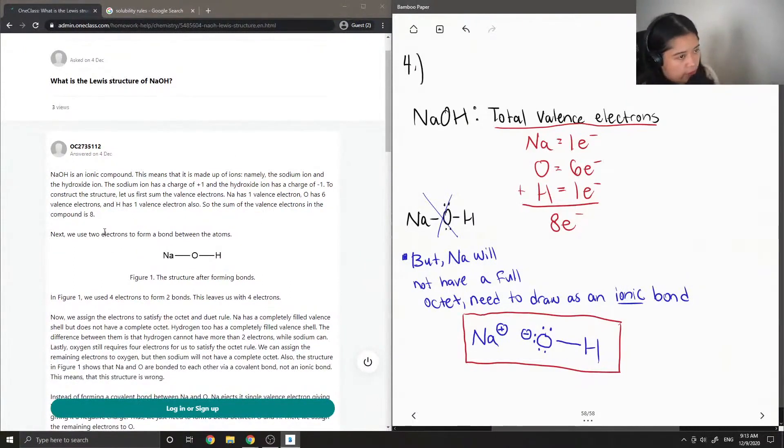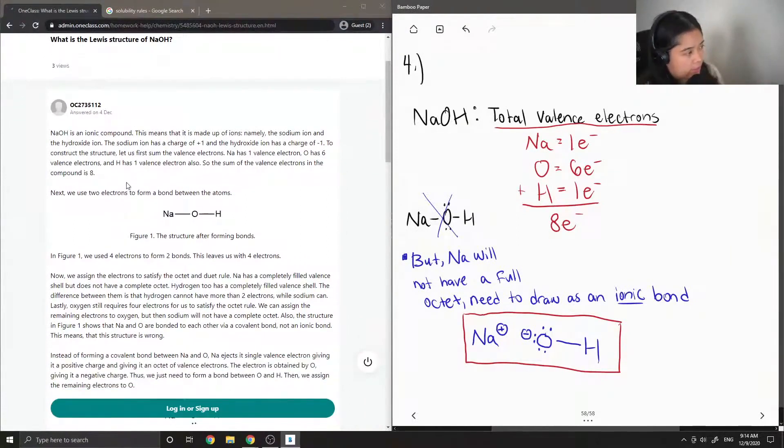Okay, so let's see what the junior tutor said. Sodium hydroxide is an ionic compound. This means that it is made up of ions, namely the sodium ion and the hydroxide ion. Sodium ion has a charge of plus one, and the hydroxide ion has a charge of minus one. To construct this structure, let us first sum the valence electrons. Sodium has one valence electron, oxygen has six, and hydrogen has one. So the sum of the valence electrons in the compound is eight.